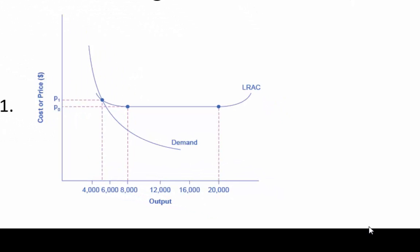Looking at the long-run average cost curve, we find the point at 4,000 units on the output axis and draw a line straight up to where it meets the LRAC curve. The curve rises up through the price levels — 10, 11, 12, 13 — and we land right about at the $13 level.